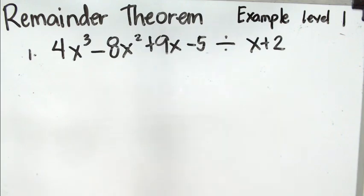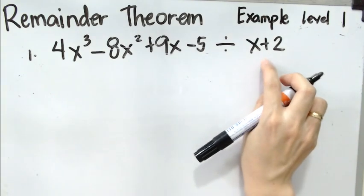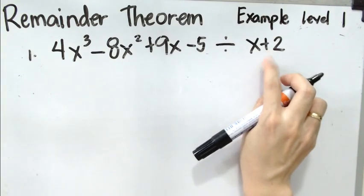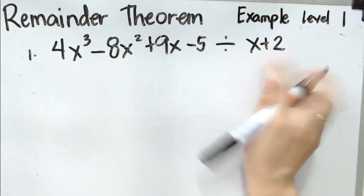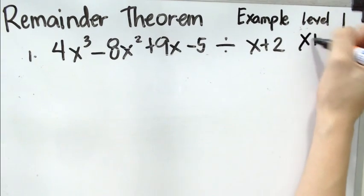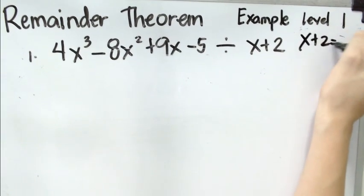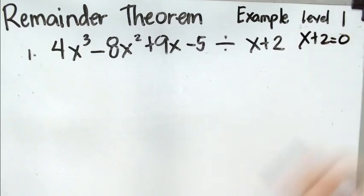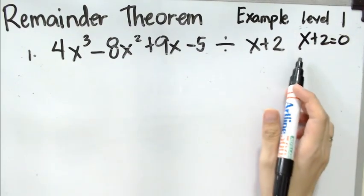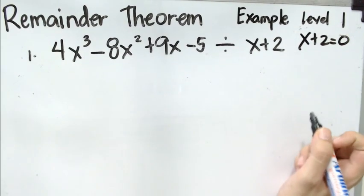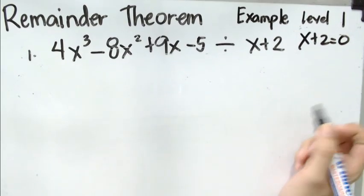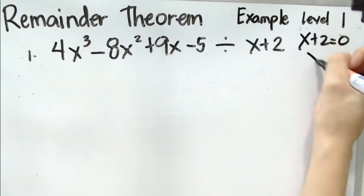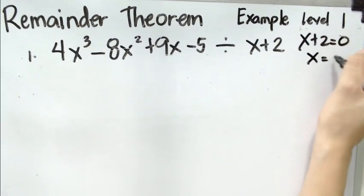So, what is the first thing we must do? We equate the divisor to 0. So we have x plus 2 equals 0. What number added to 2 gives 0? Yes, it is negative 2.